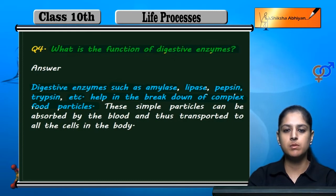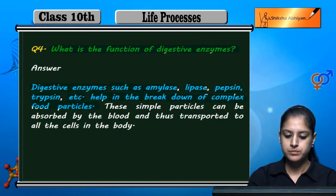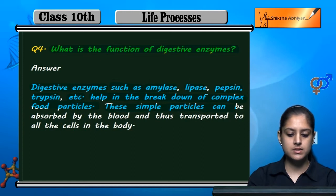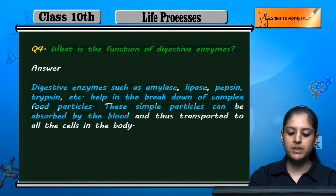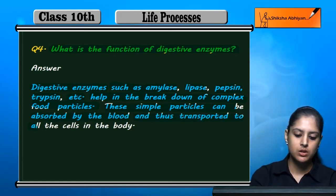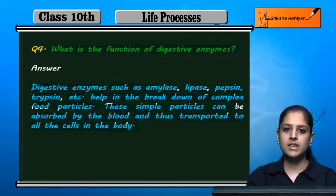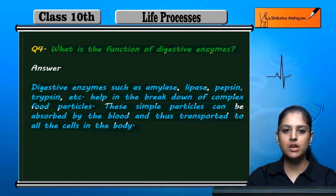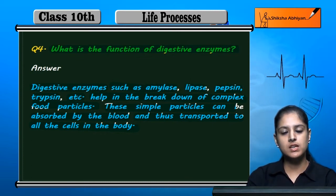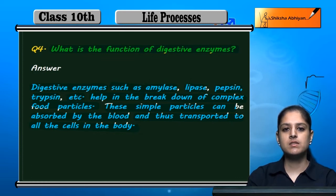These simpler substances can be absorbed by the blood and transported to all the cells in the body. Whatever food we intake, its function is to serve some purpose for the body. So these digestive enzymes break down complex food particles for better use by the body.